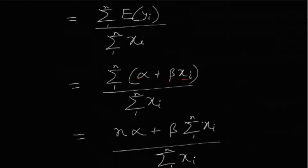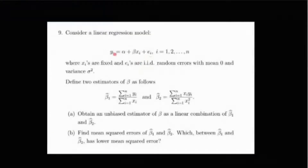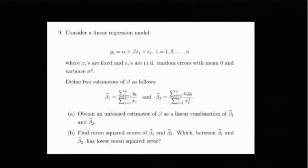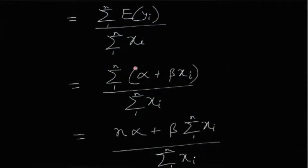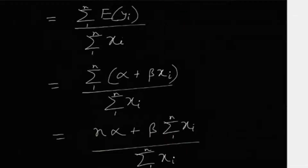Since eᵢ is the only random variable and has expectation zero, E[yᵢ] = α + βxᵢ. Therefore E[β̂₁] = Σ(α + βxᵢ) / Σxᵢ = (nα + β·Σxᵢ) / Σxᵢ. This is the expectation of β̂₁.